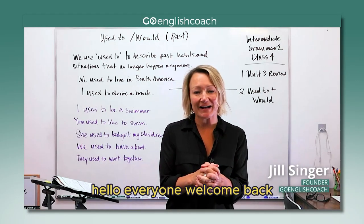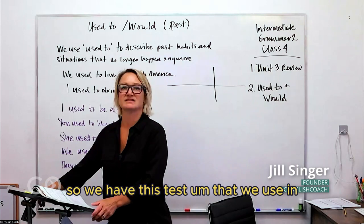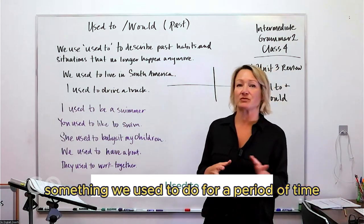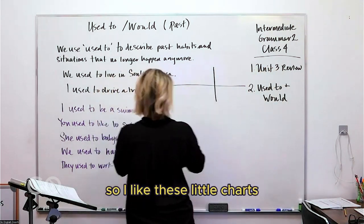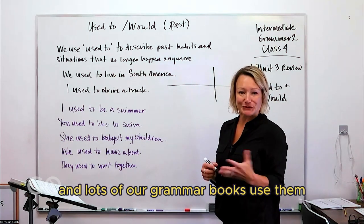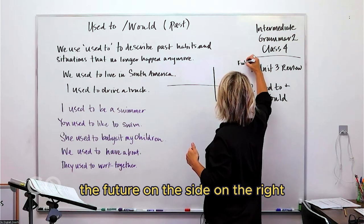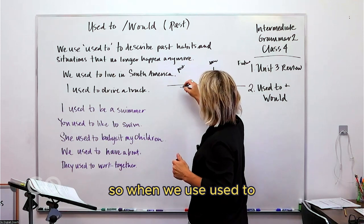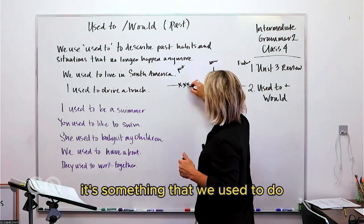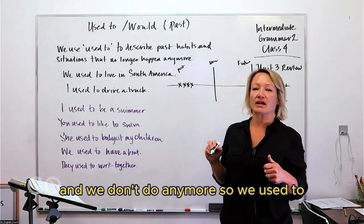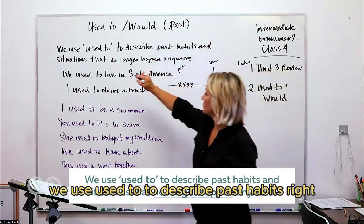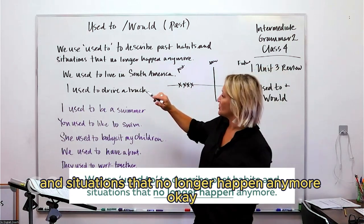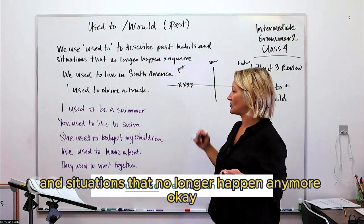Welcome back, I'm Jill, your English coach. We have this tense that we use when we're talking about things that happened in the past — something we used to do for a period of time. I like these little charts, and lots of grammar books use them. We've got the future on the right, now in the middle, and the past on the left. When we use 'used to,' it describes past habits and situations that no longer happen anymore.